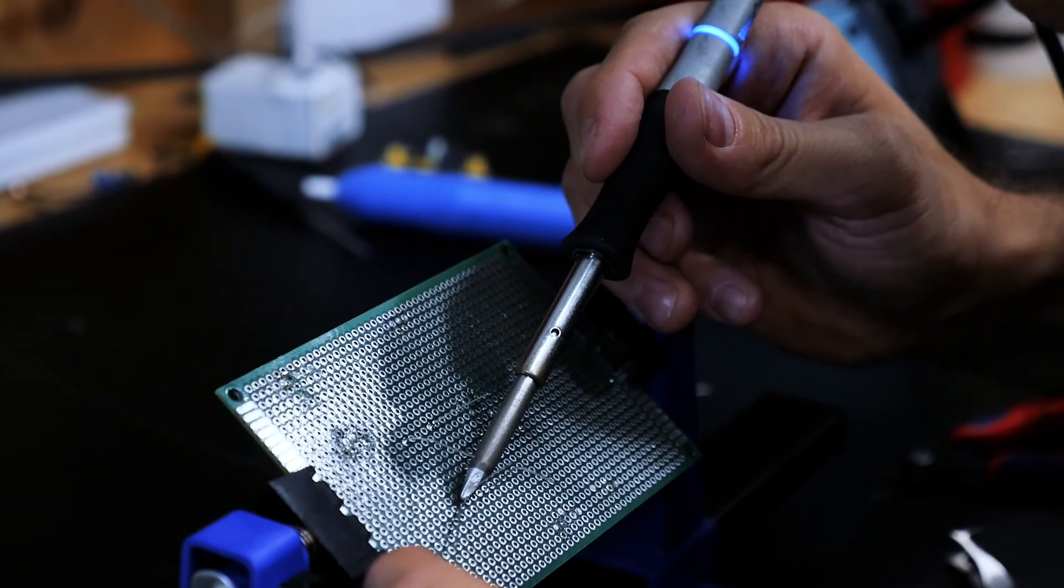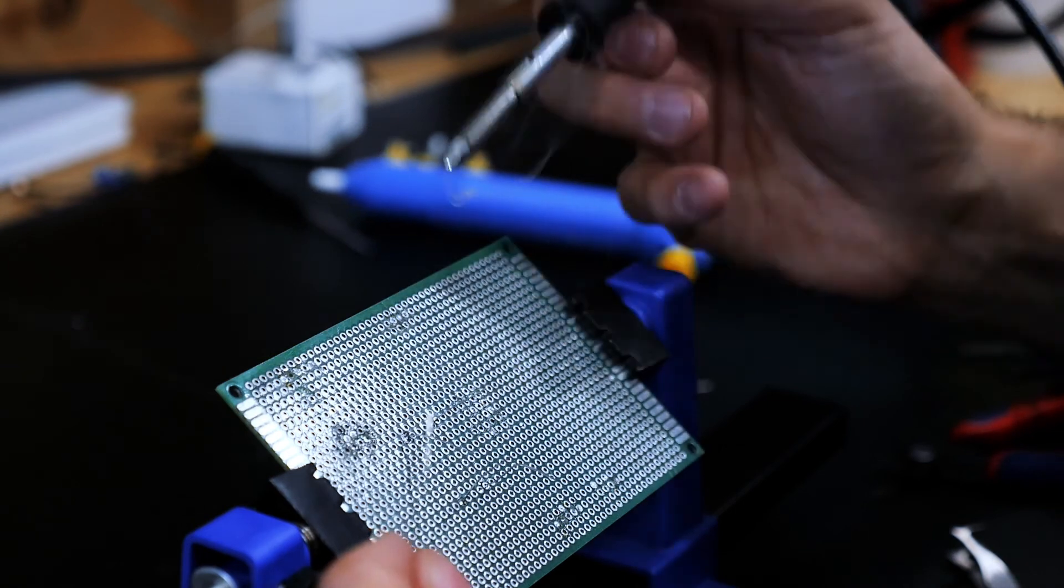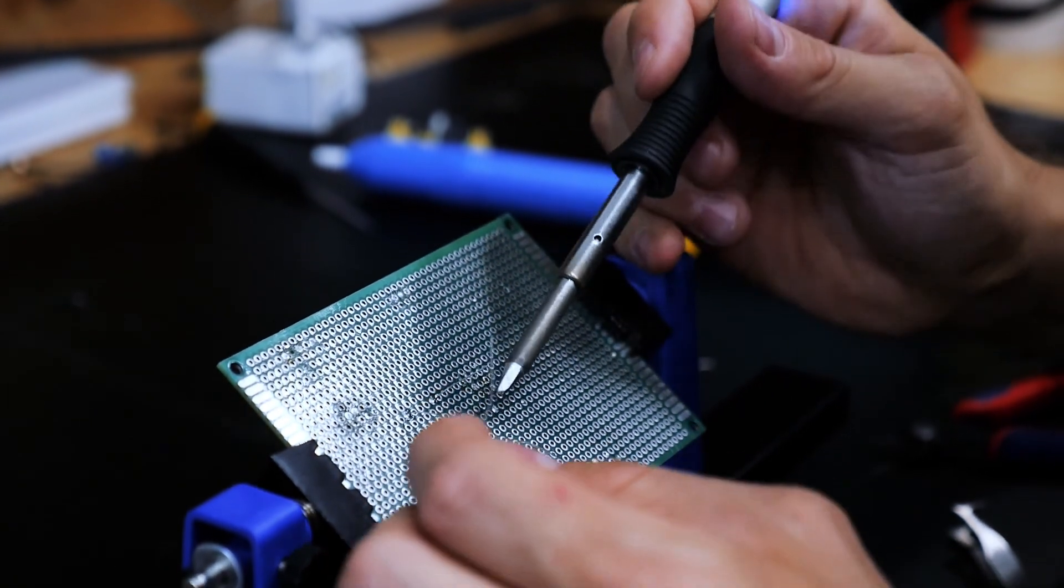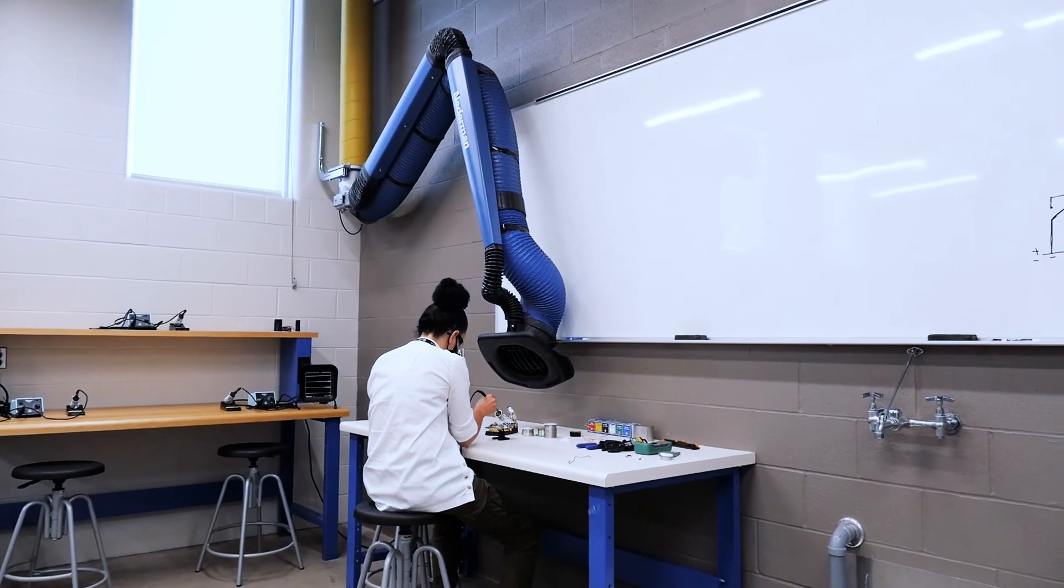Soldering is used frequently in engineering from connecting simple switches and wires to preparing complicated circuit boards. Weak or loose connections can lead to faults, short circuits, or worse. Take care when soldering and follow the safe operating procedure to solder strong connections and stay safe.